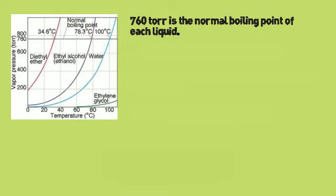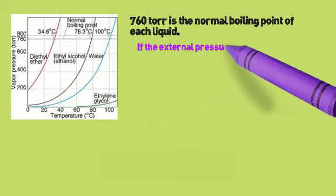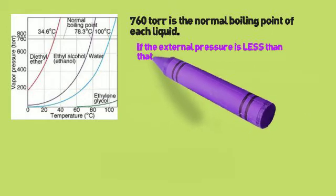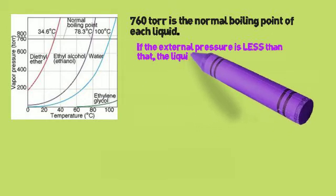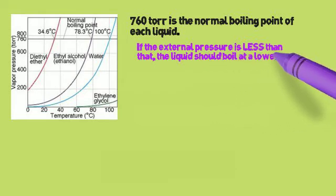However, we can manipulate that. If we change the external pressure, we might get some different results. If the external pressure on the liquid is less than 760 torr, the liquid will boil at a lower temperature because there's less pressure on it.